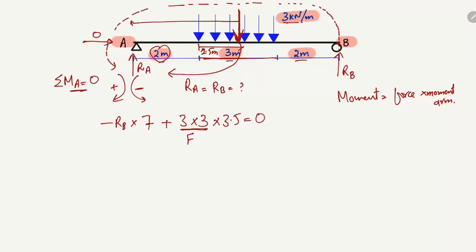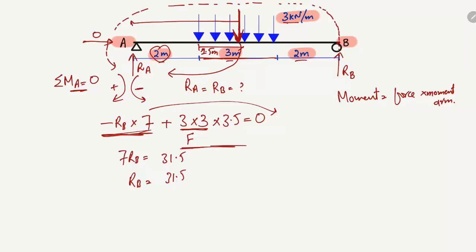This equals zero, as there are no other forces creating moments about point A. Rearranging, 7 × RB equals 3 × 3 × 3.5, which gives 31.5. Therefore, RB = 31.5 divided by 7, which equals 4.5 kilonewtons.